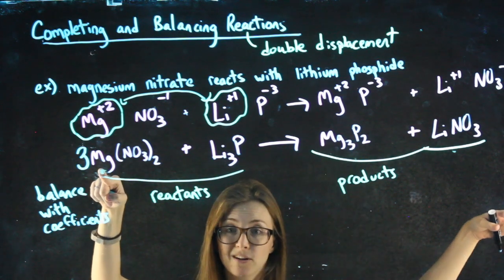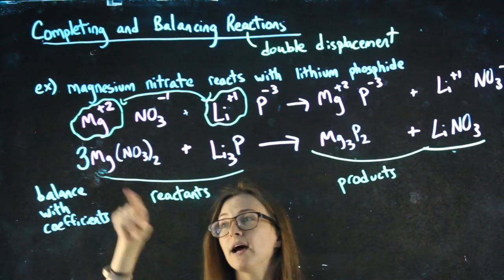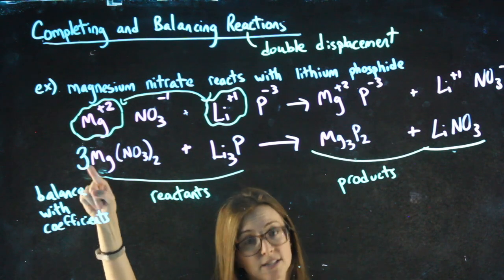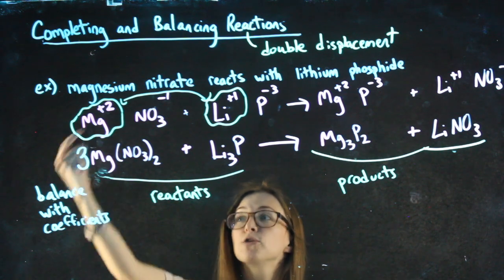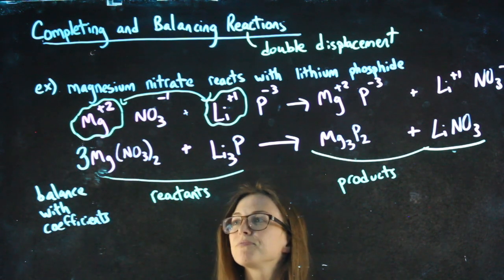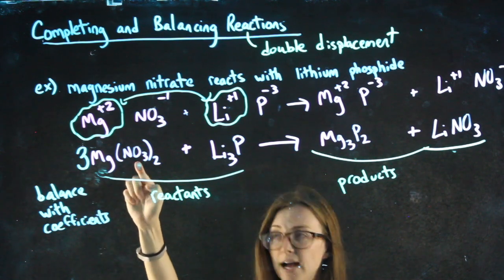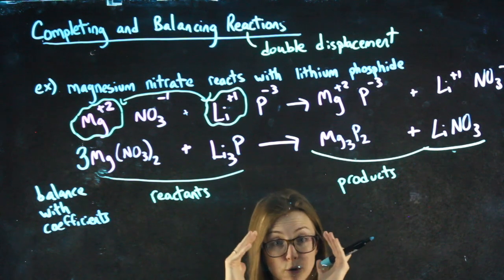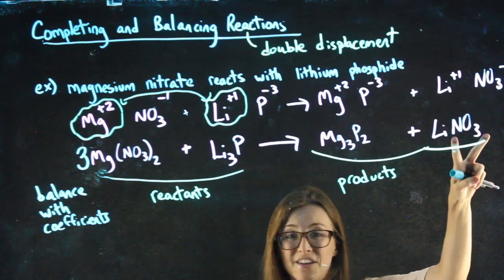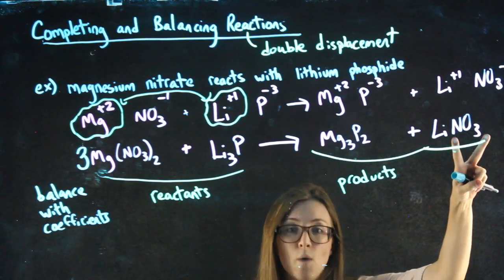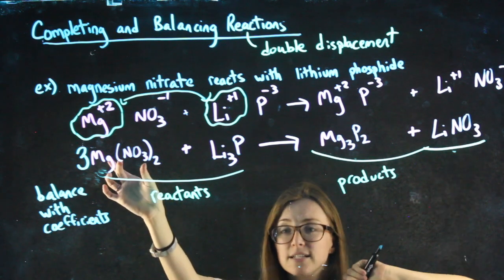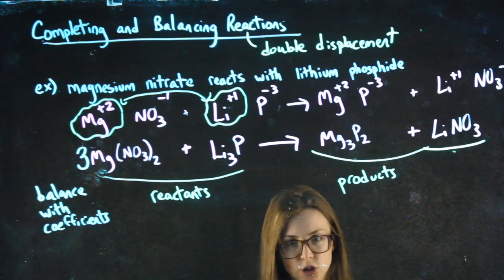I need to balance every single thing in here. And where I go next, I always say, well, this three, it's a coefficient. So it distributes to everything. I have three magnesiums, but it also affects how many nitrates I have. And I'm going to look at nitrate as a group because it stays together as a group. So it's going to be way easier to balance nitrates than just nitrogens and oxygens separately.